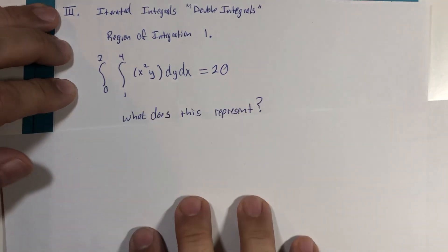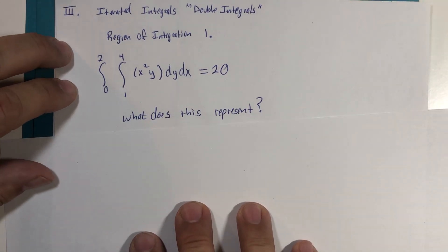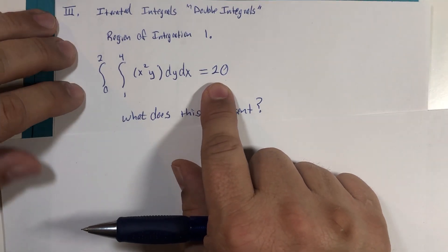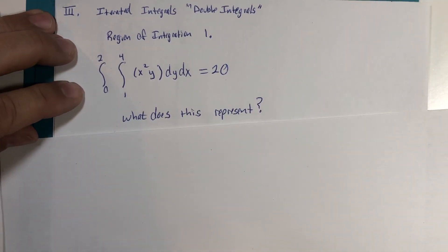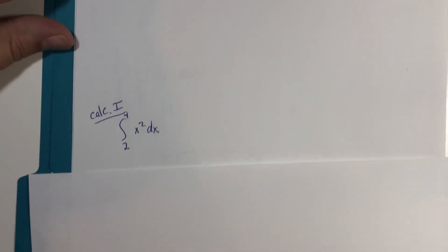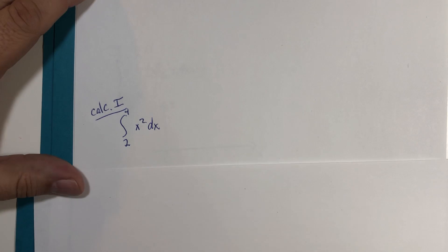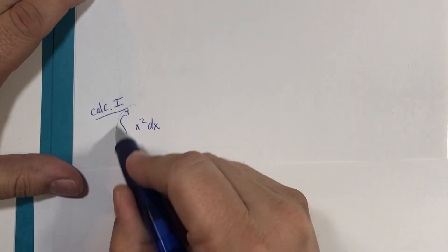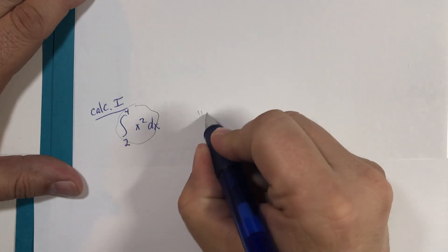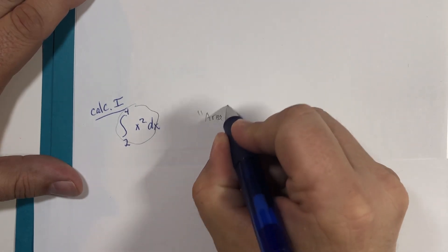And so our question really is, now what does it mean, this 20, or what could it mean? So let's take a quick little flashback to Calculus 1. And remember that when we integrated this or something like it for the first time at Calc 1, we thought of this or nicknamed it area.